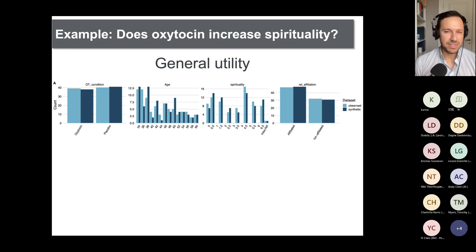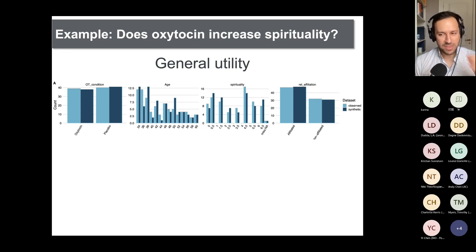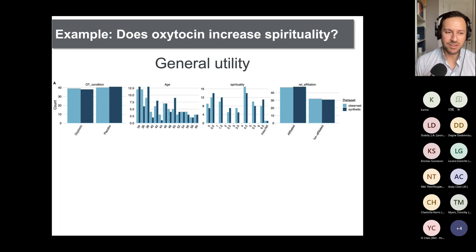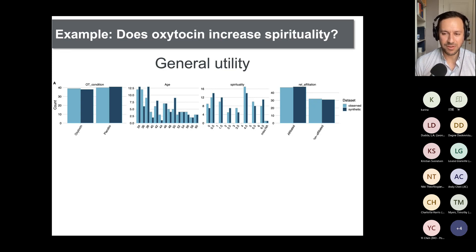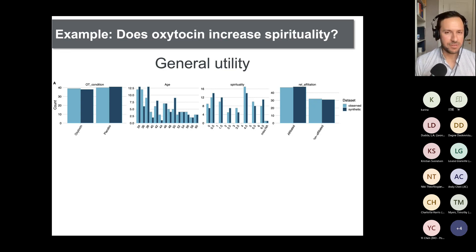This is the analysis used as a demonstration in my tutorial paper. When we compare the observed data (light blue) and the synthetic data (dark blue), we can see the counts between people randomized to the OT condition are pretty similar. The distribution of age is not exactly the same but similar. The measure of spirituality between observed and synthetic datasets shows similarities, and the counts for religious affiliation were also very similar — so that's a tick for general utility.